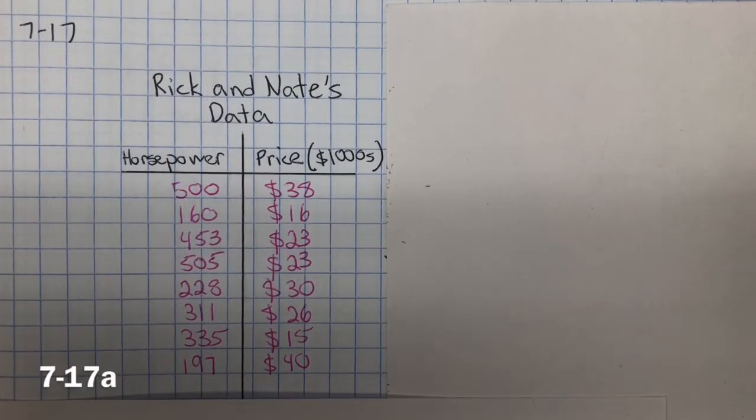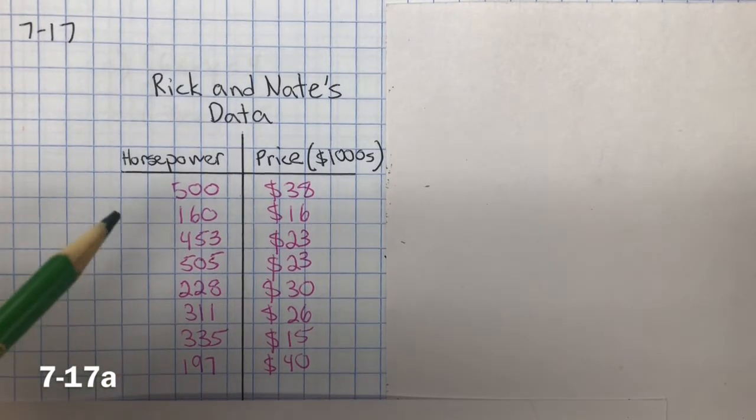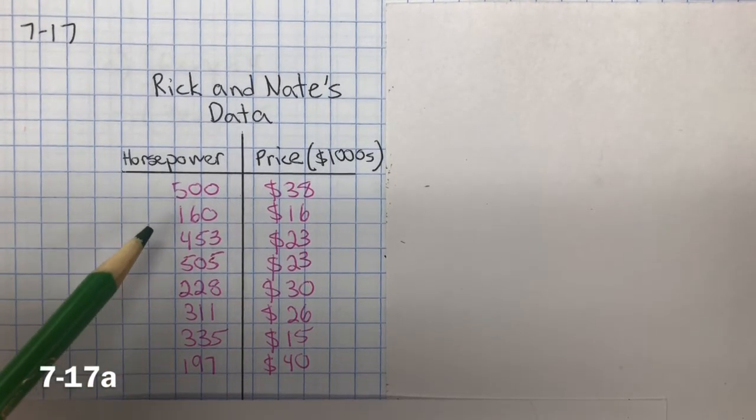For 7-17a, does the information in the table support Nate's claim that cars with more horsepower cost more? Also, is there a relationship between horsepower and the price of a car? Does it cost more for a car that has more horsepower? Is there a trend for that?